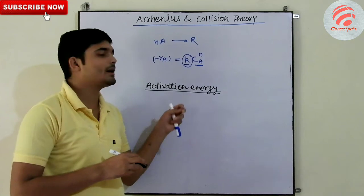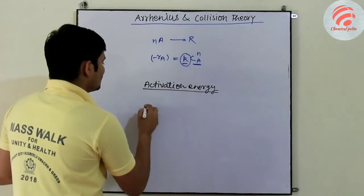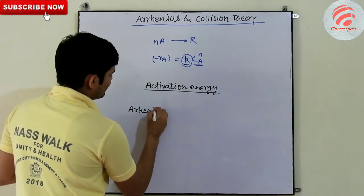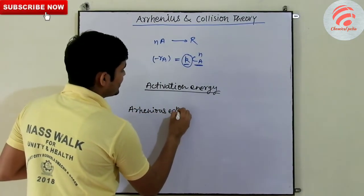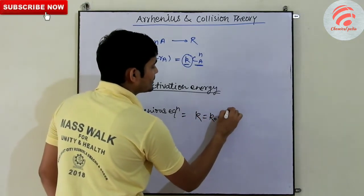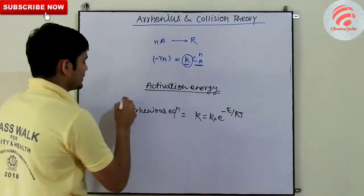Let's talk about the derivation. So, if we talk about the Arrhenius equation, which is k equals k0 e to the power minus E upon RT. This is our Arrhenius equation.